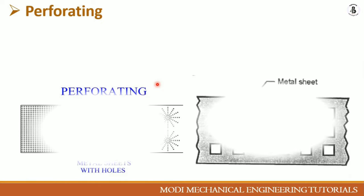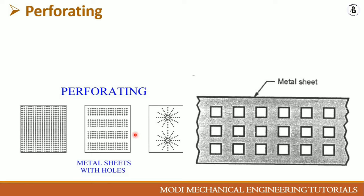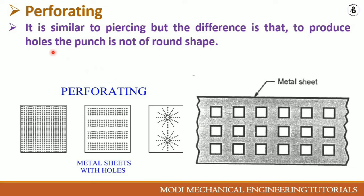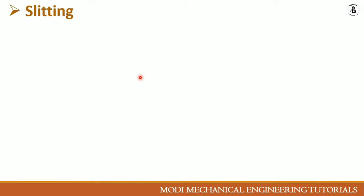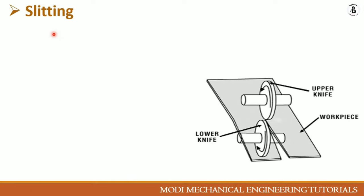Perforating involves producing a number of holes in the sheet metal. It is similar to piercing, but the punch is not necessarily round — it can be triangular, square, rectangular, or any other shape. Multiple holes are produced in a similar pattern. In this process, multiple holes which are very small and close together are cut into the sheet metal.